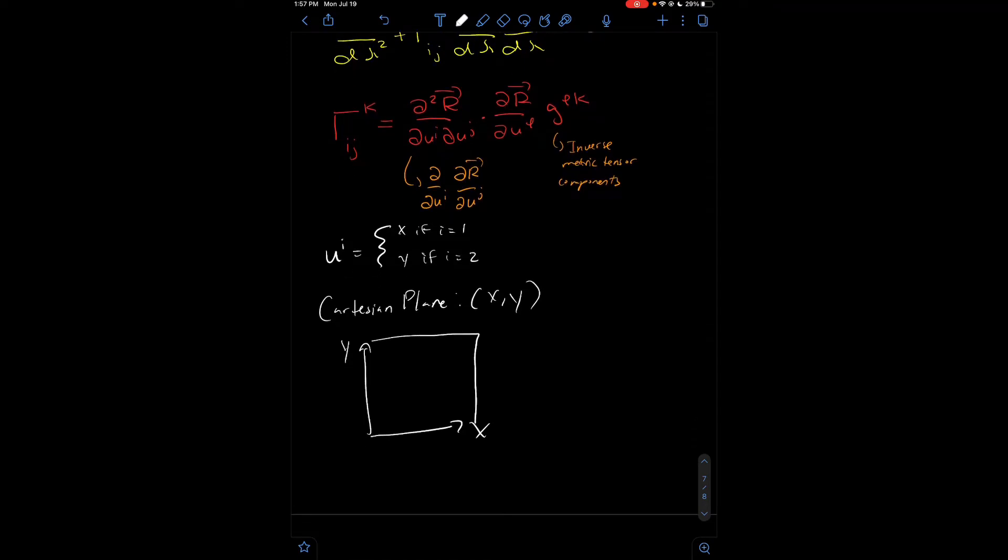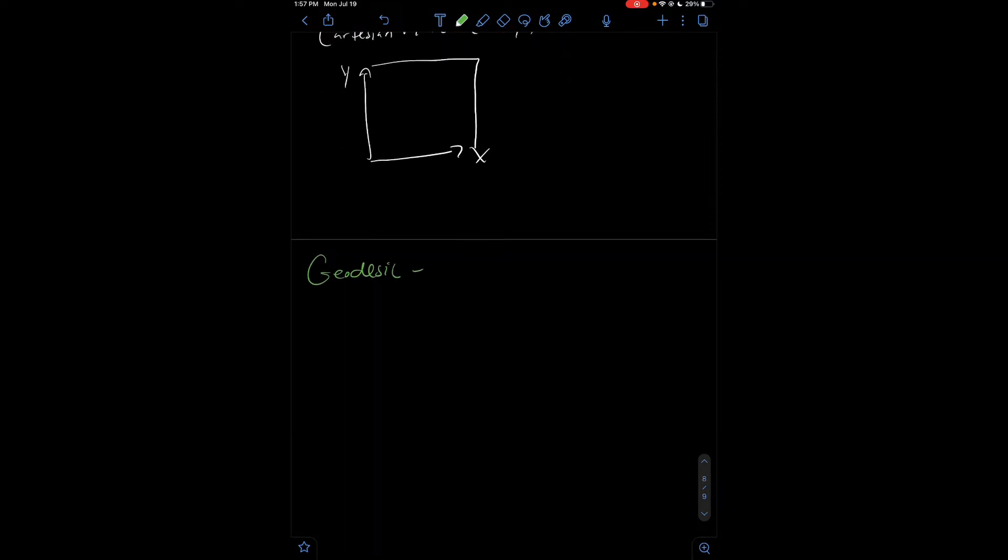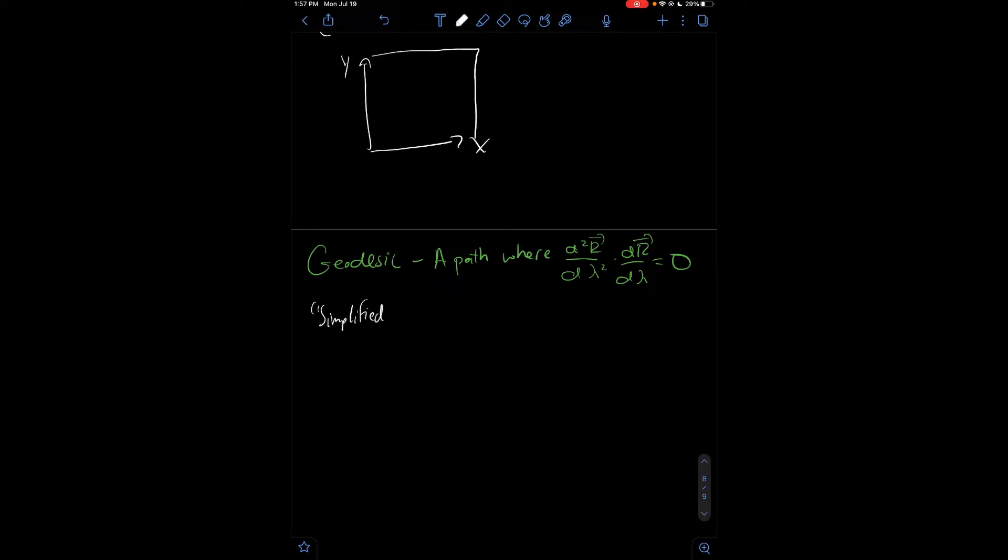So, what we are going to do today is we are going to solve for the geodesics along this plane. Now, first of all, what is a geodesic? Well, to put it in the mathematically true sense, it's just a path where the second derivative of the position vector dotted with the derivative of the position vector along the path lambda equals 0. In the simplified sense, it's basically the straightest possible path between two points.